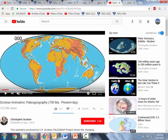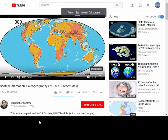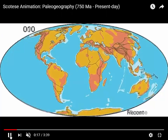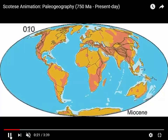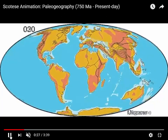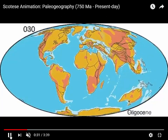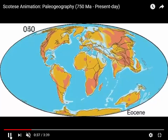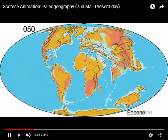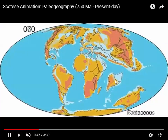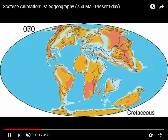Let me show you a quick video that shows a reconstruction over the last 200 million years. We're running backwards in time here — so here's 20 million years, 30 million years, 40 million years. You can see we're essentially closing the Atlantic Ocean. Here comes India, now moving away from Asia very quickly.